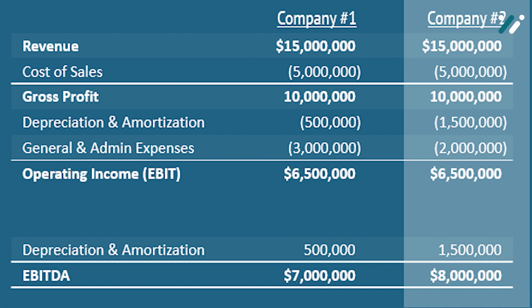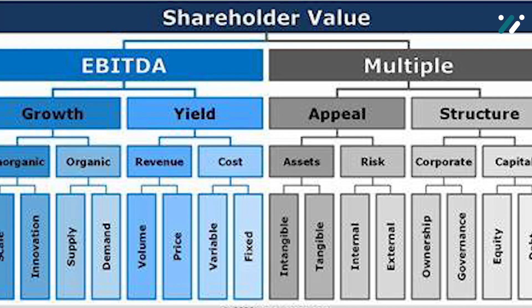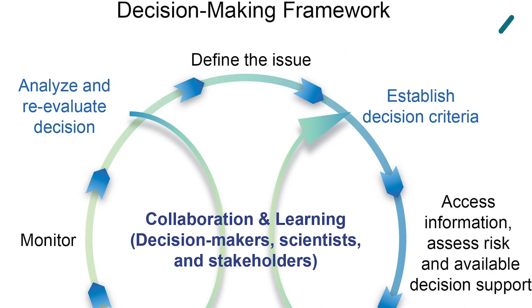The significance of EBITDA includes operational performance: EBITDA offers a more accurate reflection of a company's operational efficiency by excluding financial and non-cash factors. Comparability: it enables easy comparison between companies as it disregards variations in tax rates and financial structures. Strategic decision making: EBITDA is a valuable tool for strategic decision making, providing a basis for assessing the profitability of core business activities.